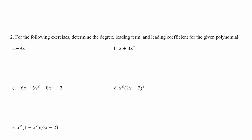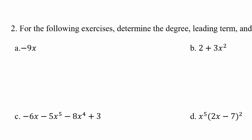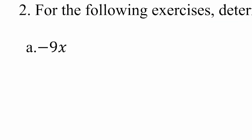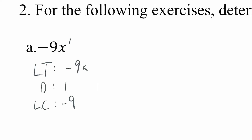Next question: for the following exercises, determine the degree, leading term, and leading coefficient for the given polynomial. I'll identify the leading term and degree at the same time, and the leading coefficient last. For the first example, whenever a variable does not have an exponent, it's implied to have an exponent of one. So with only one term — negative 9x — the leading term is negative 9x, the degree is 1, and the leading coefficient is negative 9.